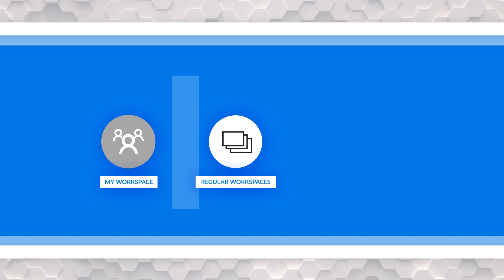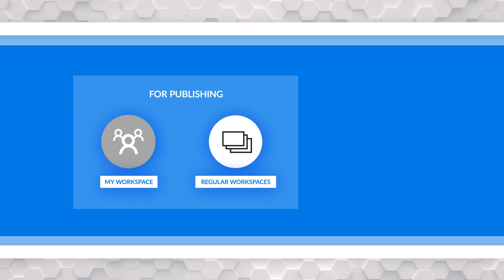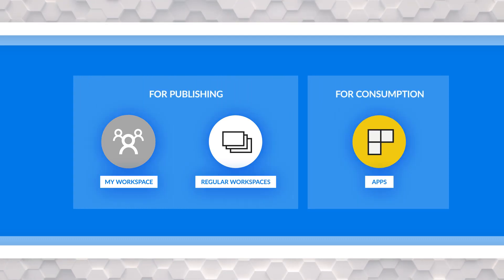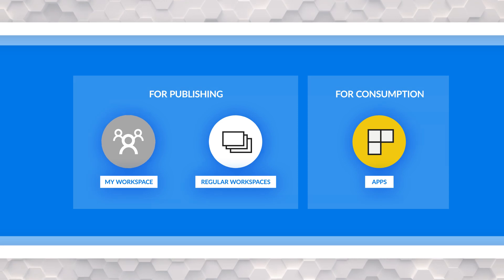We've got three effective options — two of which is where your reports are actually going to be published to, and then the other is how you put this out there for your users to consume. You've got your My Workspace, you've got regular workspaces, and then you have apps that can be published from a workspace.